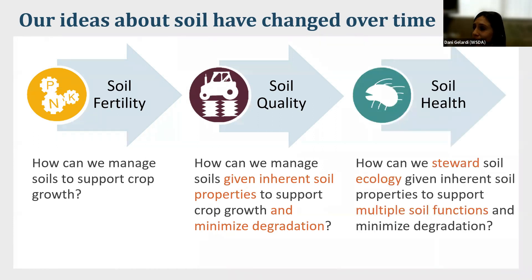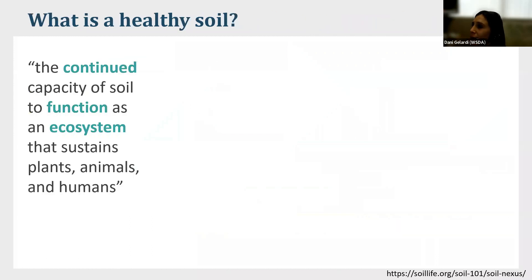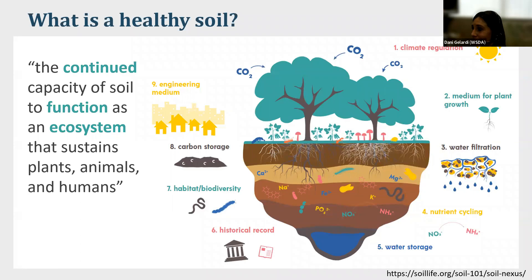The shift from fertility to quality paved the way for thinking about soil sustainability and tailoring management to the unique properties of different soils. Then we have soil health, where the question has really ballooned: how can we steward soil ecology, given inherent soil properties, to support multiple functions and minimize degradation? The soil health movement has newly recognized that soils have functions beyond crop growth — they filter air and water, store carbon, reduce effects of climate change, contain cultural significance, and support recreation.